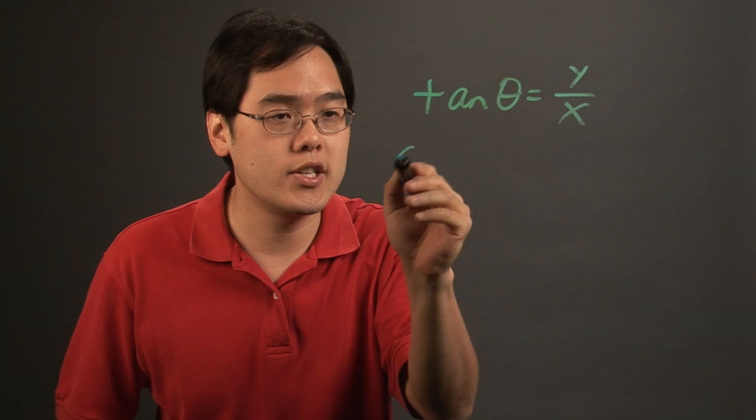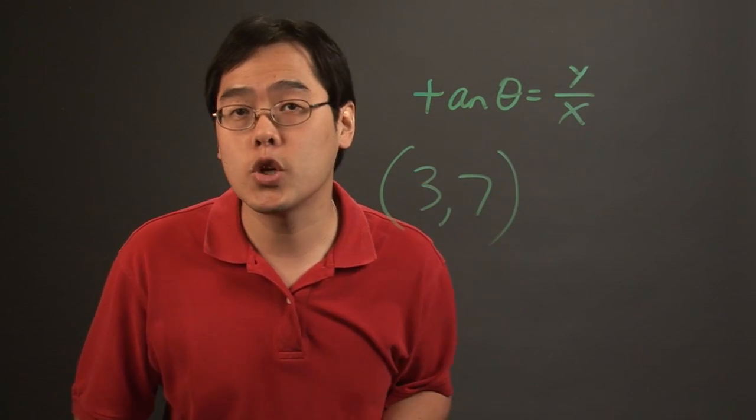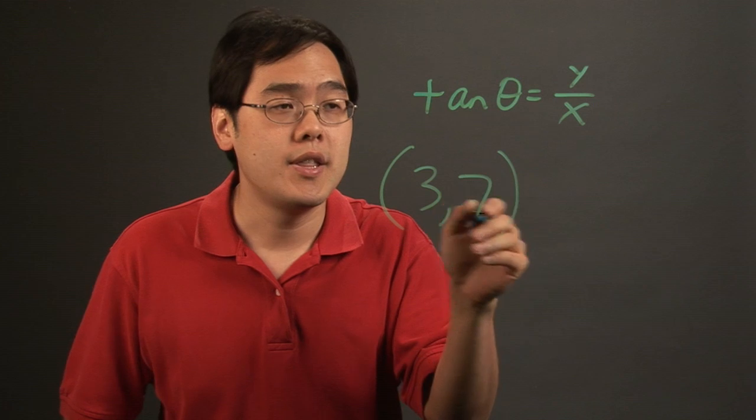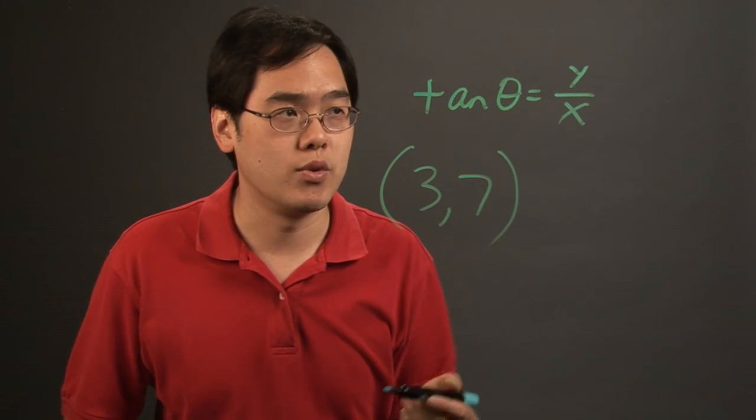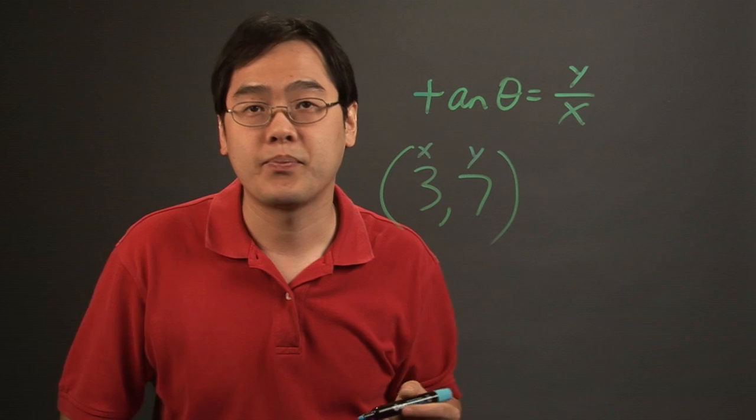So in other words, if you have a point, let's just say (3, 7), which you already know is in quadrant number 1, to find out the corresponding angle that is related to this, since 3 is the x and y is 7.